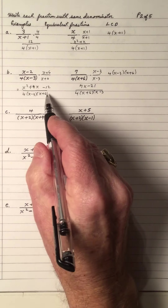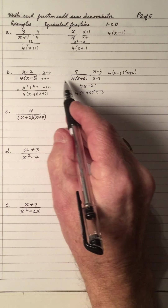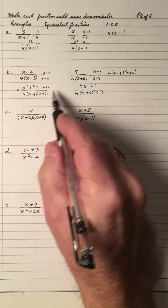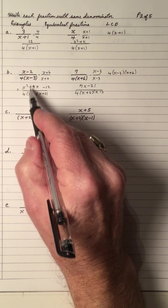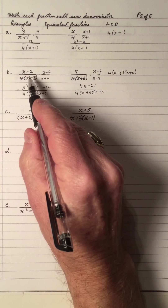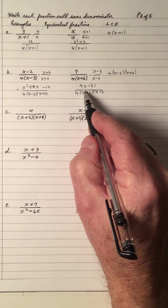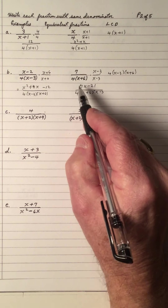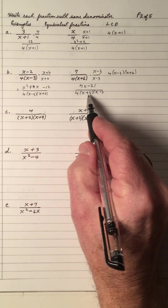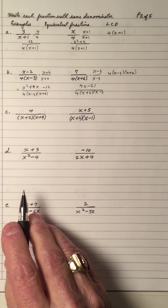So these two fractions are equivalent. This fraction here is equivalent to this one, and this fraction here is equivalent to this one. But both of these have the same denominator.